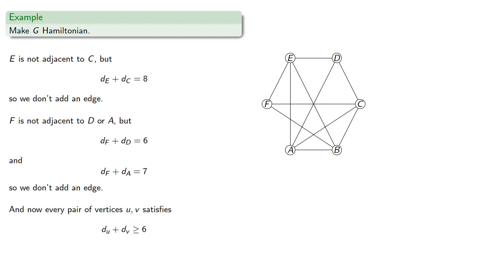And now, every pair of vertices u and v satisfies the degree sum greater than or equal to six. So there is a Hamilton cycle, which we can find.